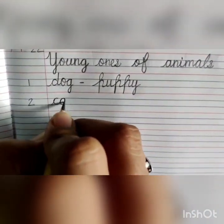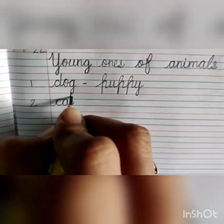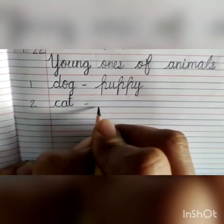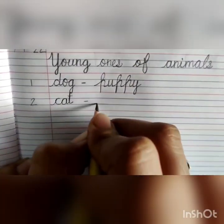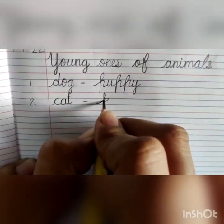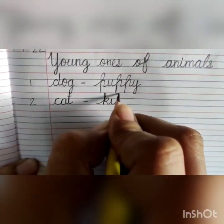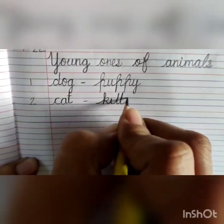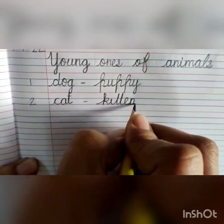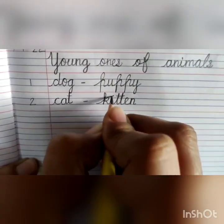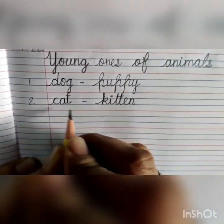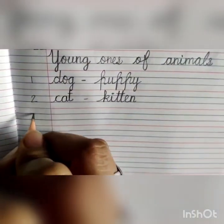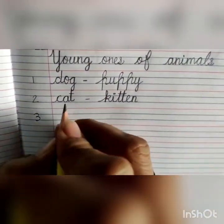C-A-T. Cat. Dash. K-I-double T-E-N. Kitten. Cat – Kitten. Number 3.